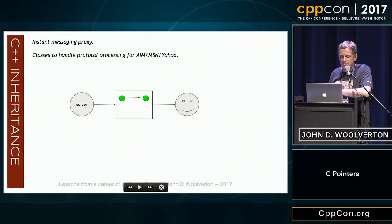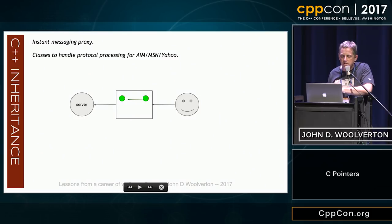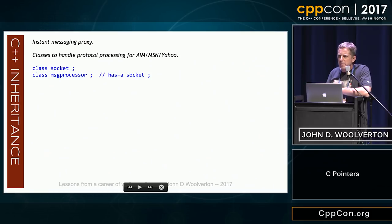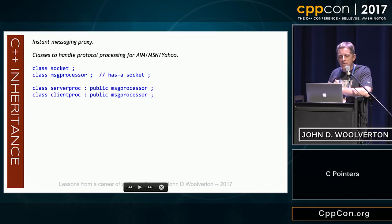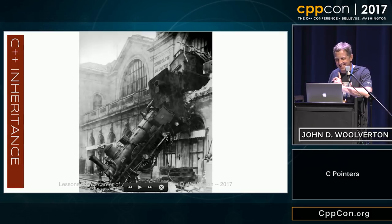I moved on to inheritance in C++. I was writing a proxy for instant messaging, and I had a server and a client, and I was in the middle. Messages would come from the server and I would catch them, parse them, and pass them on, and messages would come from the client — you see a little symmetry here. So I wrote a class socket — everyone has to write one of those back in the 90s — and a message processor that handled the particular protocol of the messaging system, and it had a socket. I made one for the server side and one for the client side, and then you need to hook them together. It works.